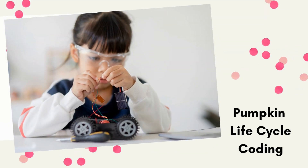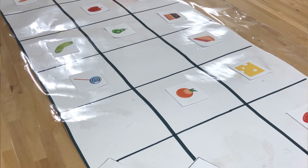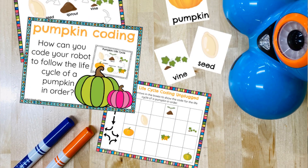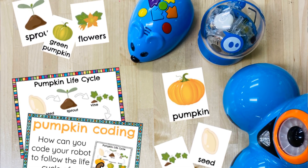The first activity is pumpkin lifecycle coding. All you need is the robots your students will code with for their grade level and the pumpkin lifecycle cards. I recommend using a grid where each space is measured so the robot can travel to each space within one forward movement. I have editable squares that are already perfectly measured for the most popular classroom robots, and students can code their robot to go through the lifecycle of a pumpkin in order.